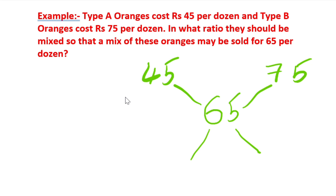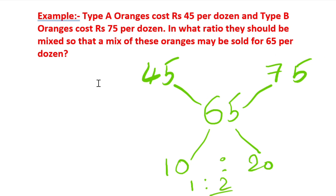Applying allegation: 75 minus 65 = 10, and 65 minus 45 = 20. So the required ratio of Type A to Type B oranges is 10:20, which simplifies to 1:2. The answer to the question — in what ratio should they be mixed to sell at ₹65 per dozen — is 1:2. This is the simplest way to solve any mixture and allegation problem.